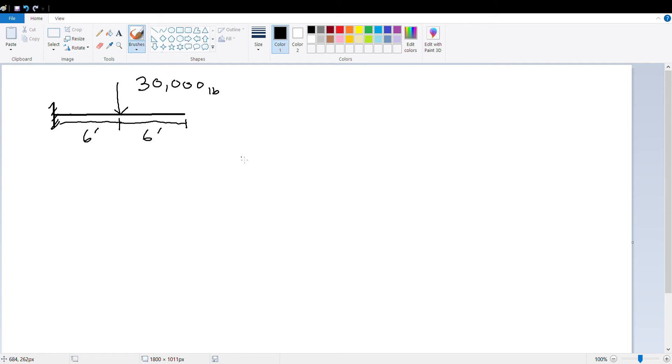So now they might ask you what is the rotation at any given point. Let's do: what's the maximum rotation at point B? So this is point B where the point load is hitting the beam, and point A is your fixed support.